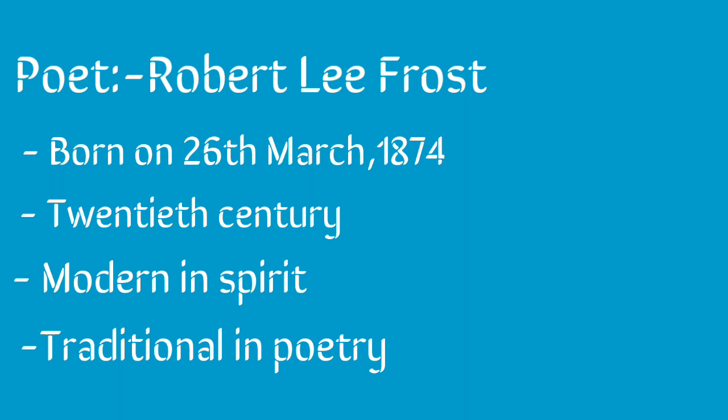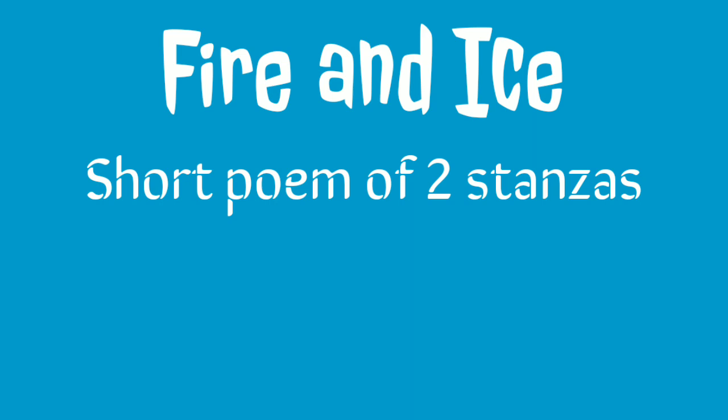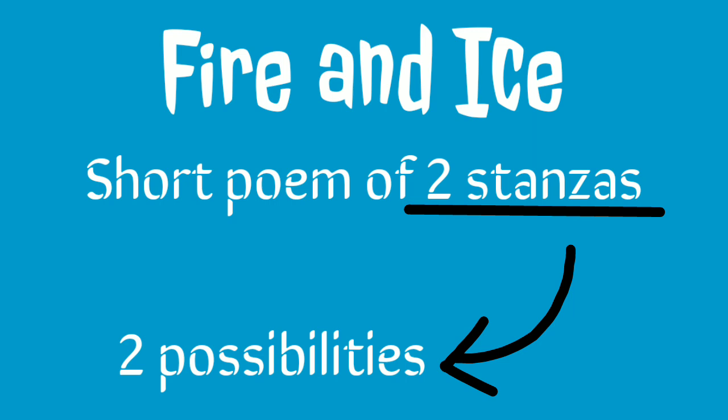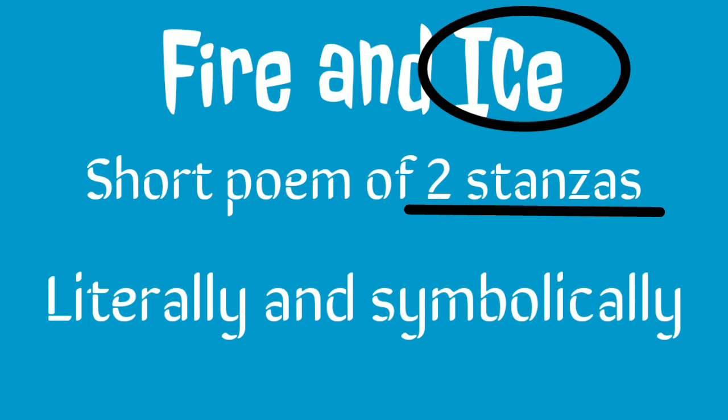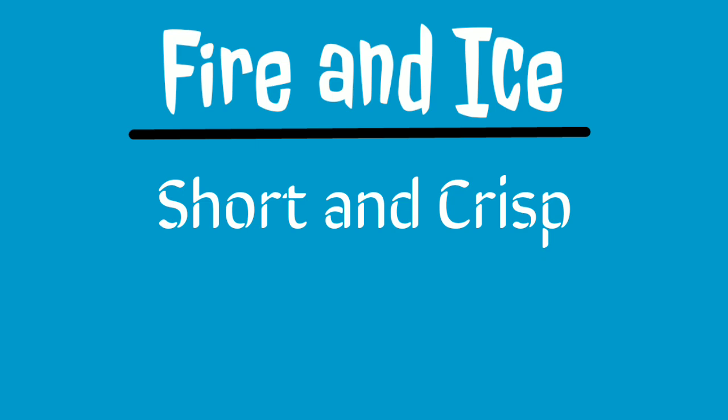Fire and Ice is a short poem consisting of two stanzas. These two stanzas deal with two possibilities of destruction of the world. How the poet has used the two elements — fire and ice — both literally and symbolically is worth appreciating. The title of the poem, Fire and Ice, is short and crisp but meaningful, and contains in itself the whole zest of the poem.